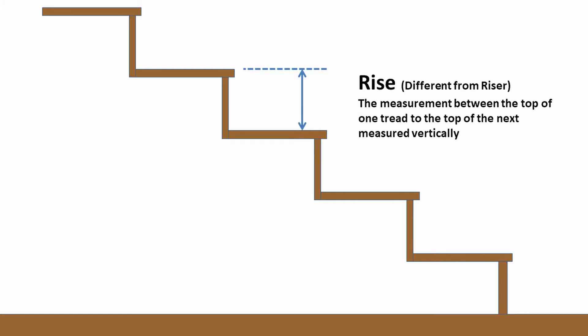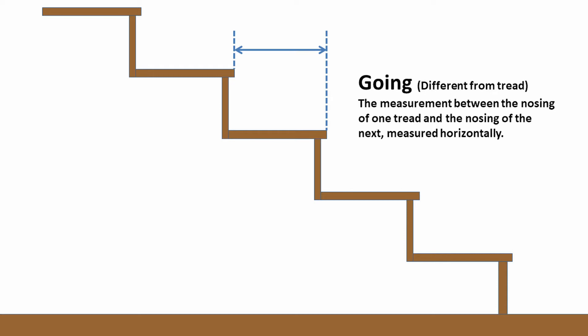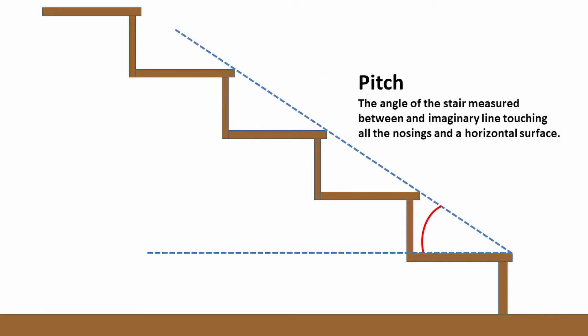Slightly different from the riser is the rise — that's the measurement between the top of one tread and the top of the next, measured vertically. That's where the geometry section comes in. We have a similar measurement relating to the dimensions of the tread, which we refer to as the going. This is the measurement between the nosing of one tread and the nosing of the next. Because the nosing can overhang the riser, it's not going to be the same as the tread depth. The last piece of geometry is the pitch — the angle of the stair measured between an imaginary line touching all the nosings and a horizontal surface, such as the floor or one of the treads.